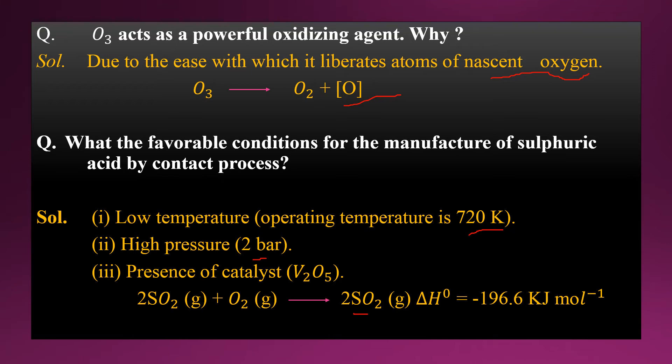The optimum temperature for the contact process is around 720 Kelvin — not lower than 720 Kelvin. The pressure should be around 2 bar, and the reaction takes place in the presence of a catalyst. The catalyst used is vanadium pentoxide, V2O5. These are the essential conditions for the manufacture of sulfuric acid by the contact process.